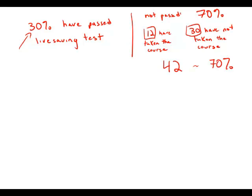42 is 70%. I noticed 42 is divisible by 7, so I'll just divide both sides by 7. That means 6 would be about 10%. And if 6 is 10%, that means there are 60 people in the entire club.